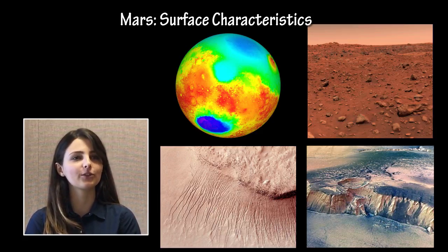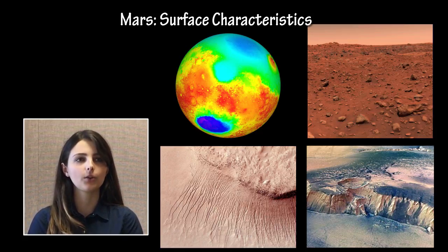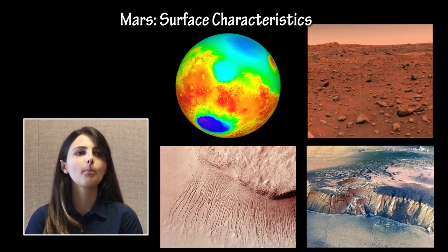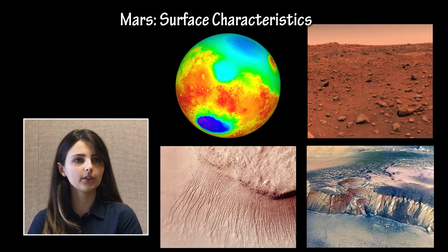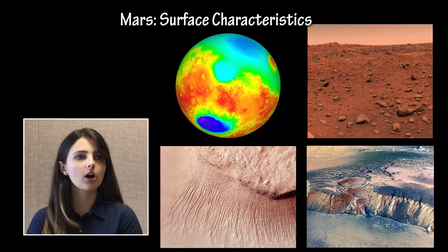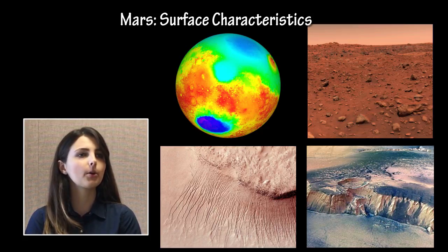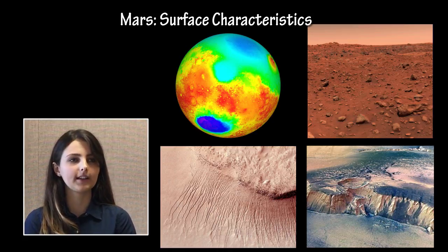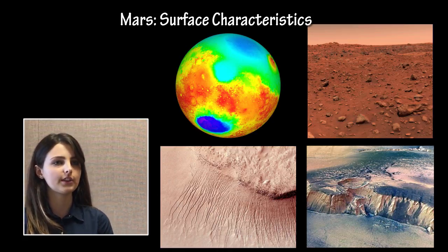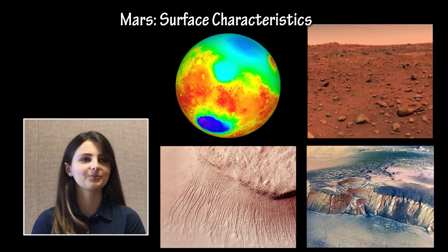The surface of Mars is characterized by a reddish color due to the abundance of ferrous, or iron-containing, minerals, but also exhibits darker regions and polar ice caps. Craters, scarps, and glacial plains are among the most notable features of Mars's surface, the most famous being the large Hellas impact basin. Mars has a thin carbon dioxide atmosphere, about one one-hundredth as thick as Earth's.